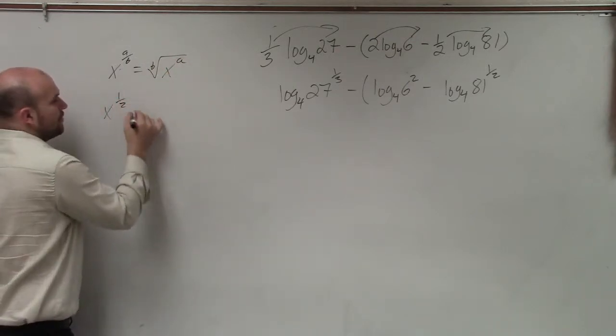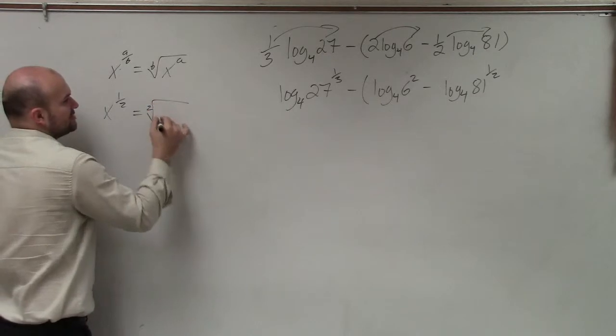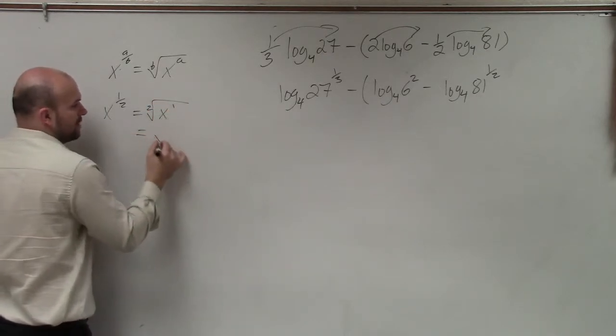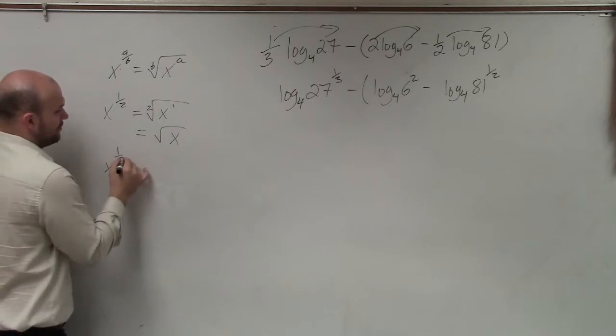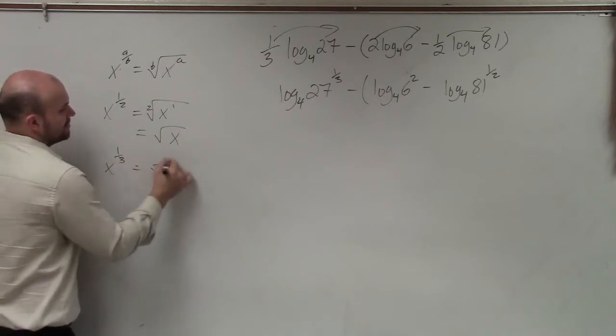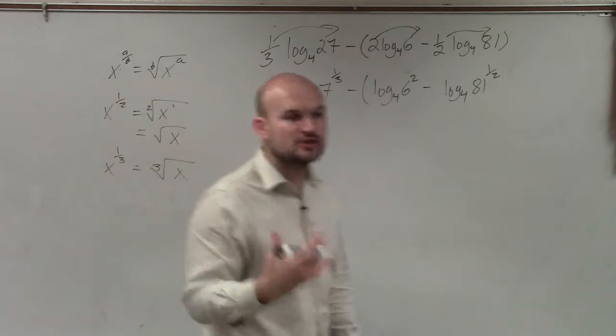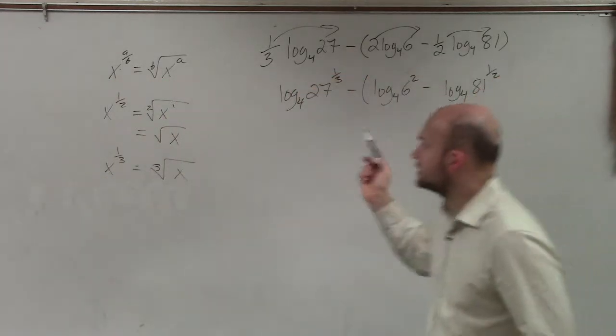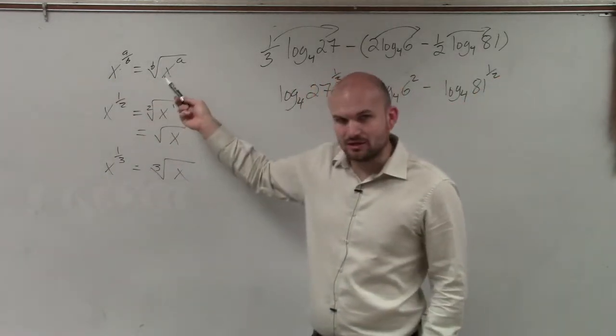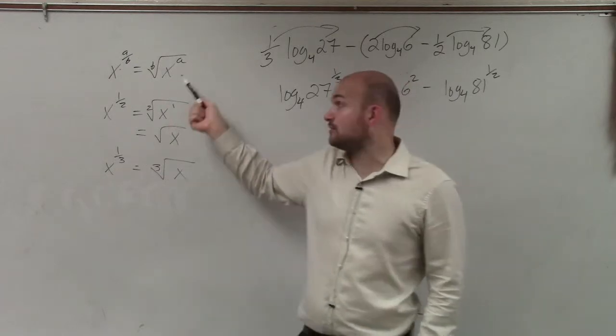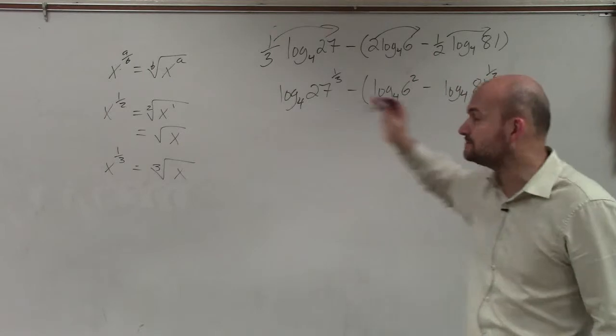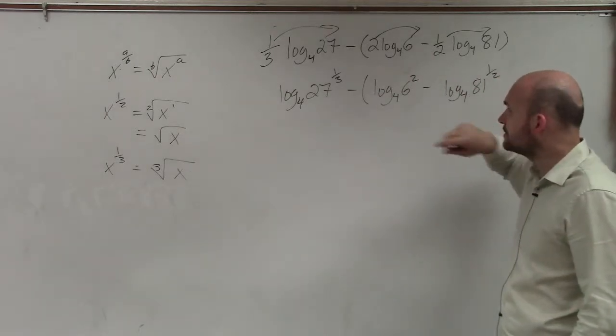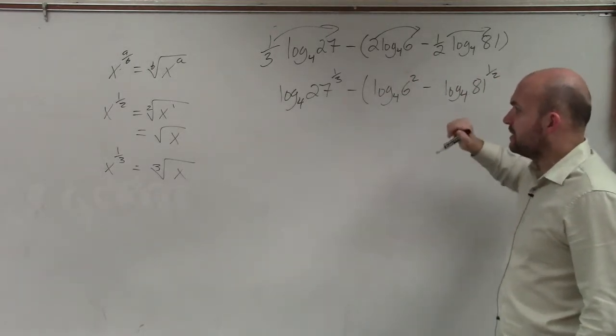So if I have x to the 1/2, that's equivalent to the square root of x. If I have x to the 1/3 power, that's equivalent to the cube root of x. Understanding how to go from rational to radical is very helpful. Also, how to go from radical to rational can be as important in this chapter as well.